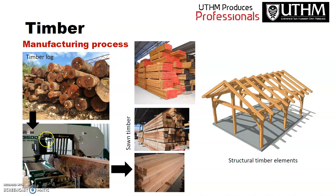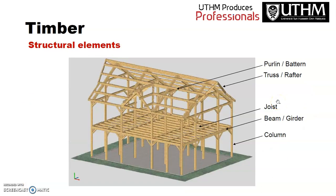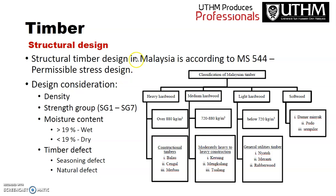The timber manufacturing process involves taking a log through a sawing machine to produce sawn timber sections. Structural timber systems include purlins, battens, trusses, joints, beams, and columns. Structural timber design in Malaysia follows MS 544, a permissible stress design standard, with design considerations including density, strength group, moisture content — greater than 19% is wet and less than 19% is dry — as well as timber defects, seasonal effects, and natural defects.